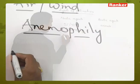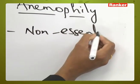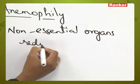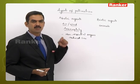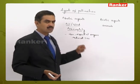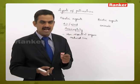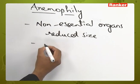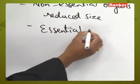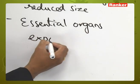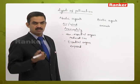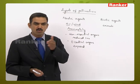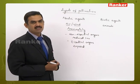The first character is that non-essential organs should be small or reduced in size, or they may be completely absent, so that essential organs are easily exposed to the environment. The essential organs should emerge and be easily exposed so that when pollen grains are moving through the air, they may stick to the stigmatic surface.